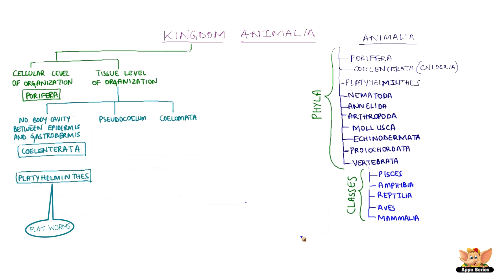Platyhelminthes are flatworms as their body is flattened dorsi-ventrally, that is from top to bottom. They are called triploblastic because they have three layers of cells from which differentiated tissues can be made. Tapeworms, Planaria, and Liver flukes are examples.